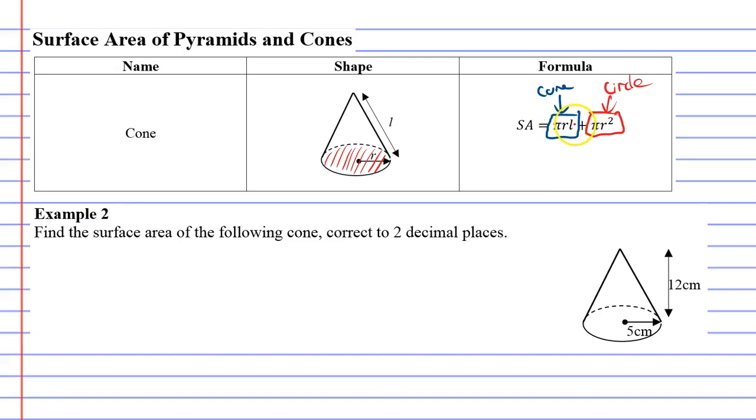Anyway, Example 2 has a base, so Example 2 uses the whole formula written above: πrl + πr². Now you might notice that they have given us r which is 5, but they haven't given us l. They've given us the height but we need l, the length of the diagonal side here.